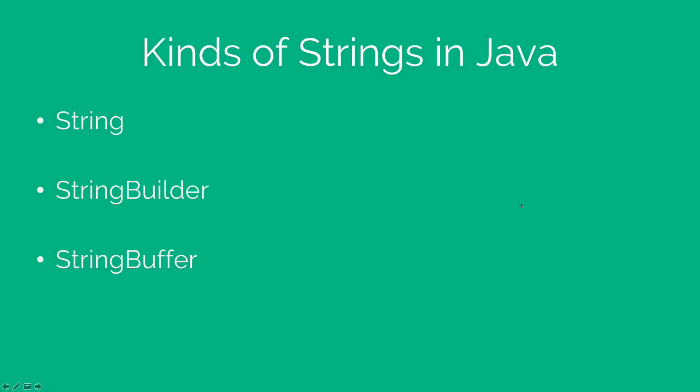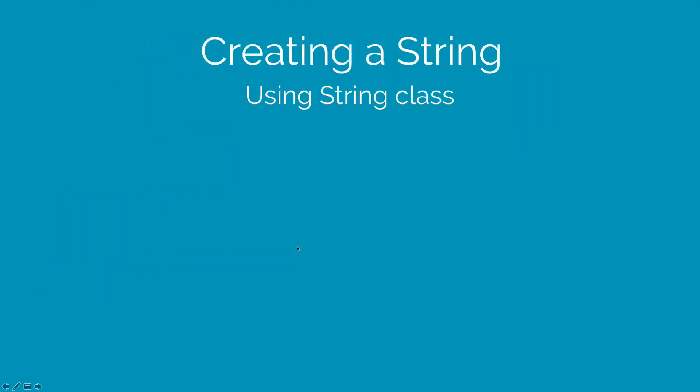There are three ways you can make a string in Java: using the string class, using the string builder, or using the string buffer. Let's take a look at the string class in Java. So how do you make a string using this? Simple.